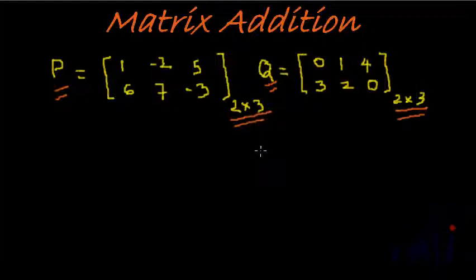Once we know that the orders are equal, as it is given here both are 2 by 3, all we need to do is add up the corresponding elements together and then arrive at the summation. How do we do this? Let me show you.